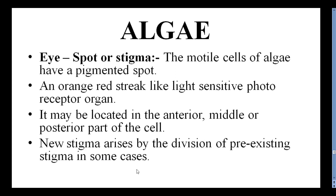The eye spot or stigma: motile cells of algae have a pigmented spot — an orange-red, streak-like, light-sensitive photoreceptor organ. It can receive light and may be located in the anterior, middle, or posterior part of the cell, depending on the cell structure. In some cases, a new stigma arises by division of the pre-existing stigma.